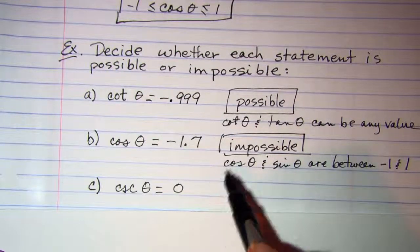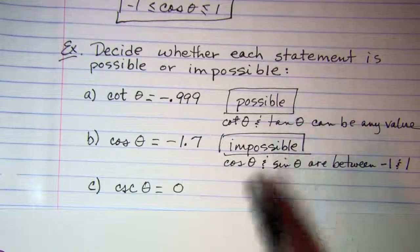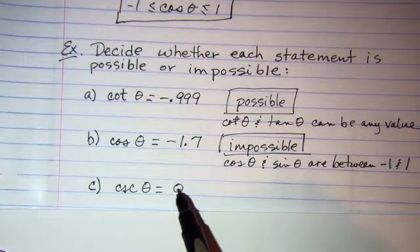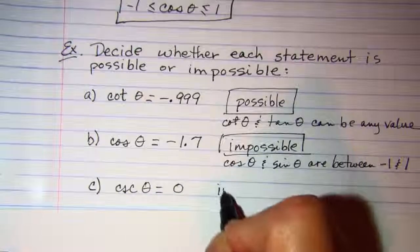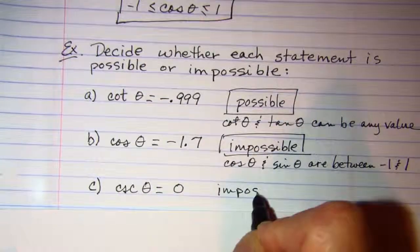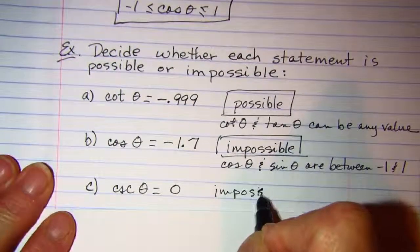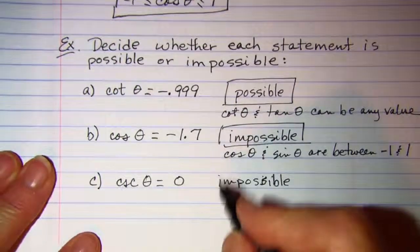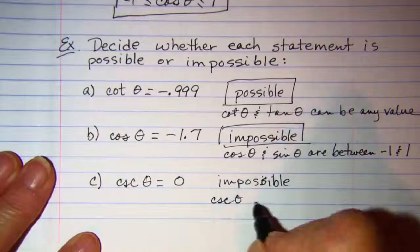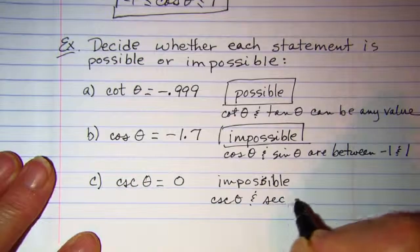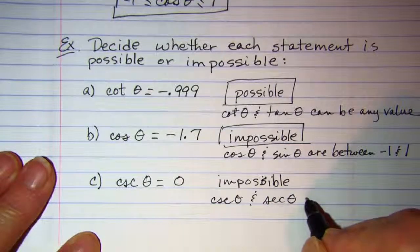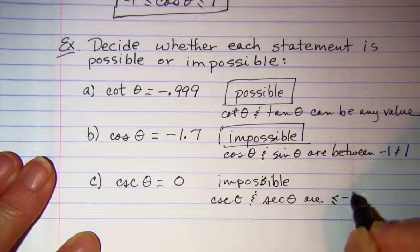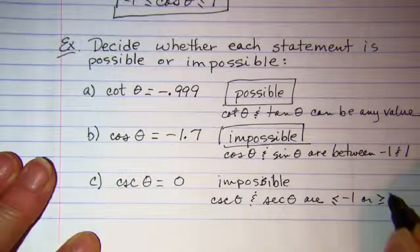Then their reciprocals have to be outside of that interval, so this is impossible as well. We would write cosecant and secant are less than or equal to negative one or greater than or equal to positive one.